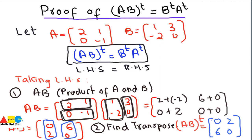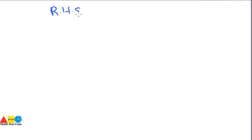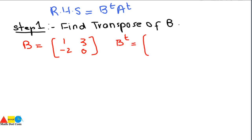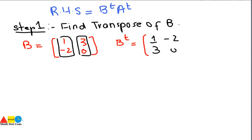Now we find the right hand side, which is B transpose times A transpose. Step 1 is to find the transpose of B. B is [1, -2; 3, 0]. We convert its columns into rows: the first column [1, -2] becomes row [1, -2], and the second column [3, 0] becomes row [3, 0]. So B transpose equals [1, -2; 3, 0].